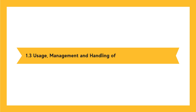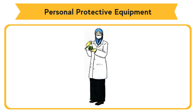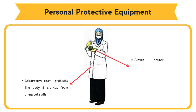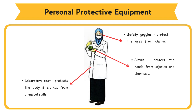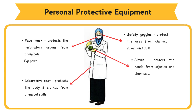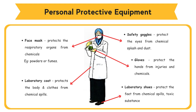1.3 Usage, Management, and Handling of Apparatus and Materials. Every individual that carries out an activity in a chemical laboratory must wear self-protecting equipment to protect them from chemicals. Laboratory coat protects the body and clothes from chemical spills. Gloves protect the hands from chemicals. Safety goggles protect the eyes from chemical splash and dust. Face mask protects the respiratory organs from chemicals such as powders or fumes. Laboratory shoes protect the feet from chemical spills, toxic substances, or sharp objects.